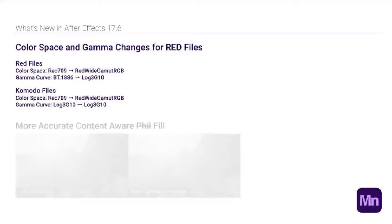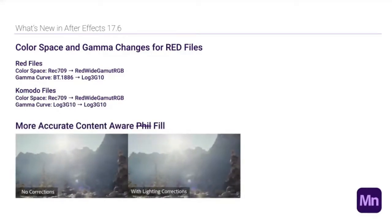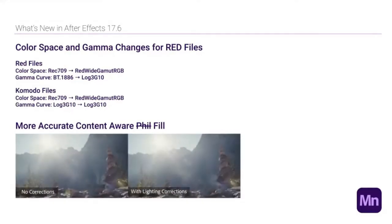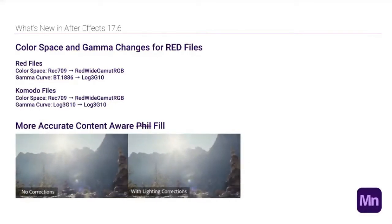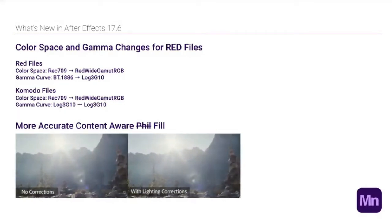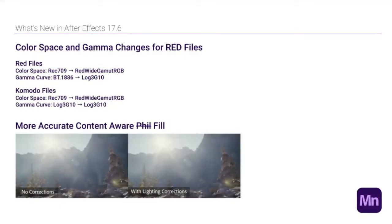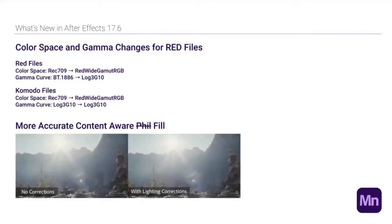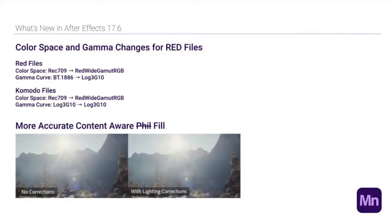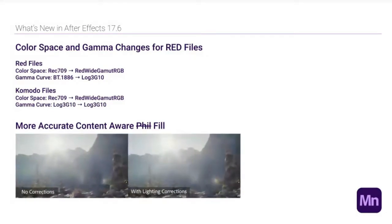The other new feature they added was a more accurate content-aware fill, which has adaptive lighting correction. Looking at these two examples: the old content-aware fill has a hazy shadow in the bottom right, the lens flare goes away with weird edges. The new content-aware fill — you still get some edges and the lens flare kind of disappears, but it's much more subtle. Content-aware fill is magic to me; I don't understand it, but it's amazing when it works right.